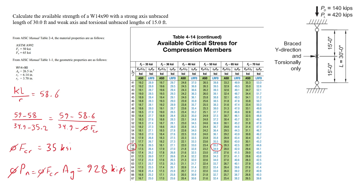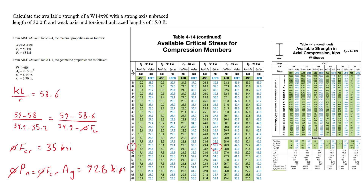Using the AISC specification equations, although lengthier, is more comprehensive and applicable to all cases, as we will see in the next example. Table 4-14 assumes failure by flexural buckling and does not apply if the member fails due to torsional or flexural-torsional buckling. Similarly, table 4-1 does not include all W sections or other structural steel shapes like built-up sections.